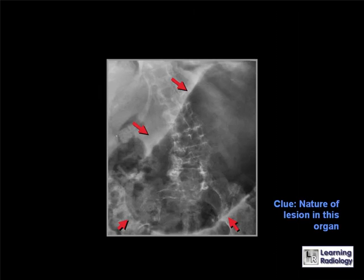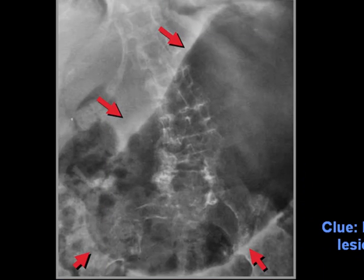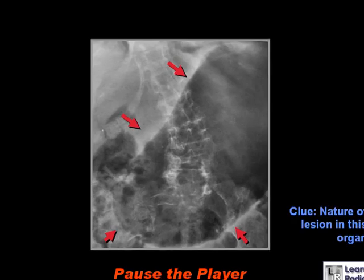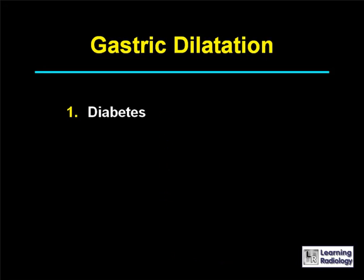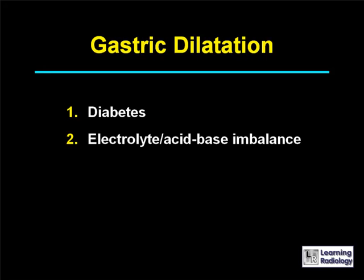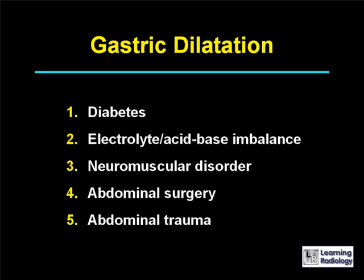The next differential diagnosis is for gastric dilatation. There are five main causes: diabetes, electrolyte or acid-base imbalance, neuromuscular disorder, abdominal surgery, or abdominal trauma.